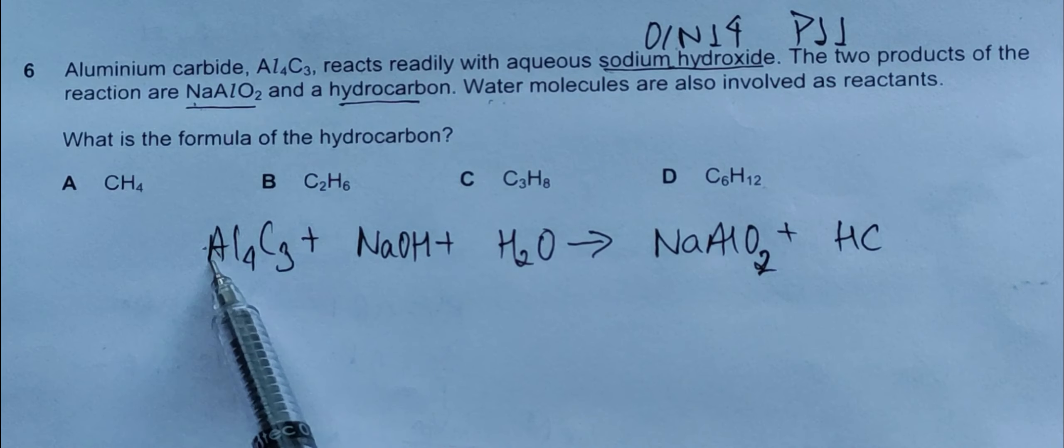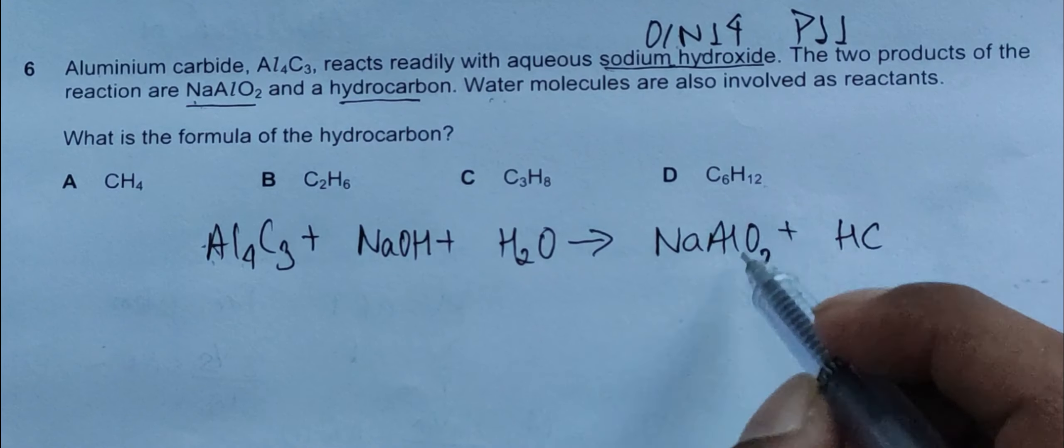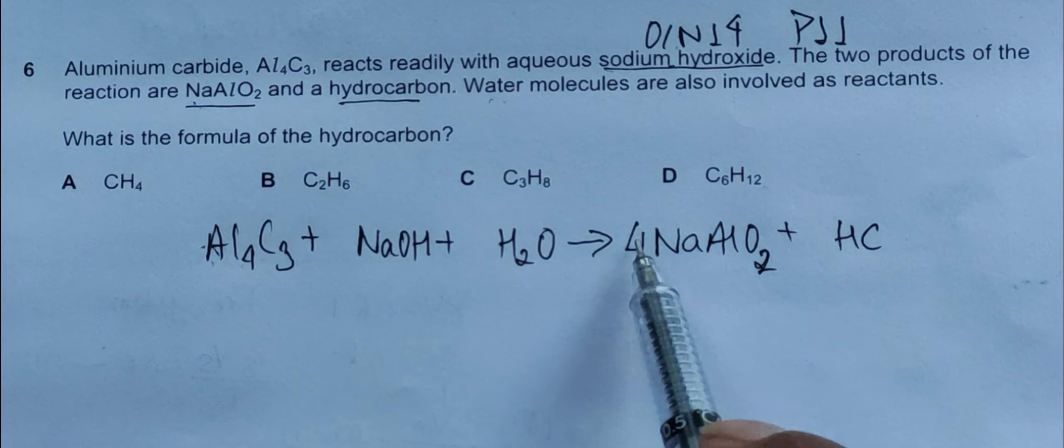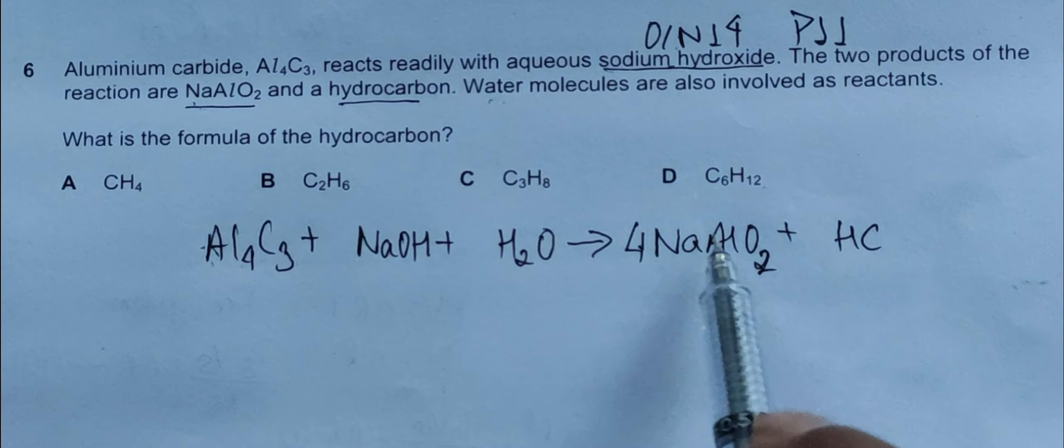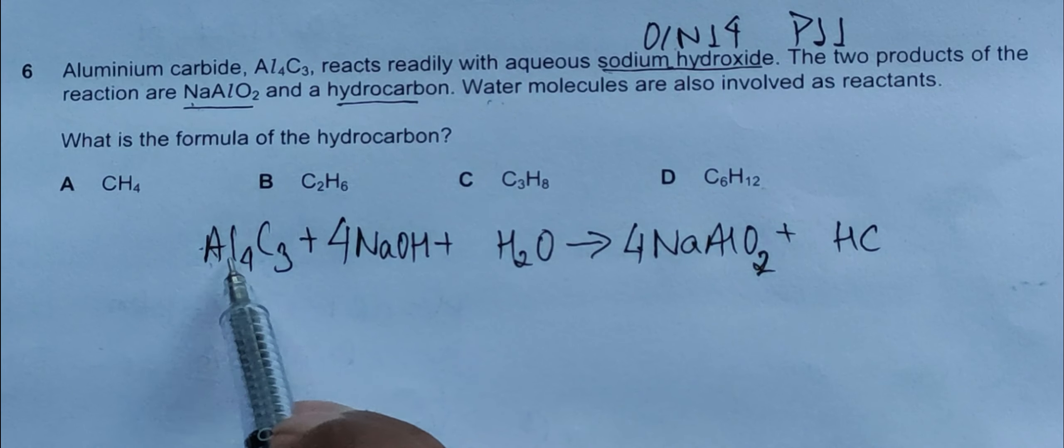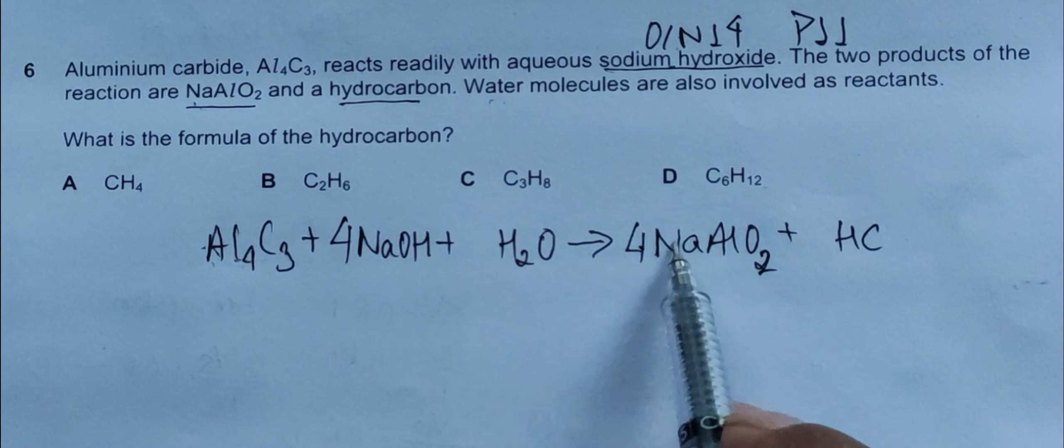First, if we try to balance the aluminum, we have four aluminum here, one aluminum here, so four should go here. Now trying to balance the sodium - four sodium, one sodium, we write four here. Sodium is also balanced. Four aluminum, four sodium is balanced.